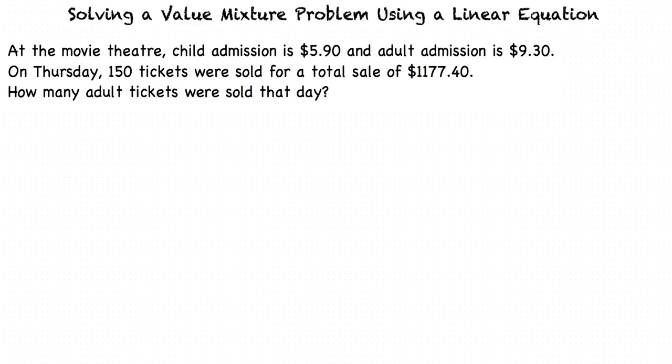At the movie theater, child admission is $5.90 and adult admission is $9.30. On Thursday, 150 tickets were sold for a total sale of $1,177.40. How many adult tickets were sold that day?